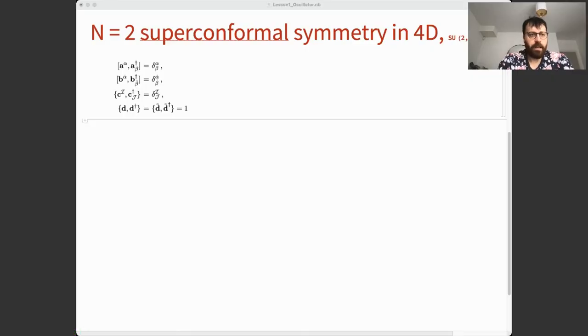Now we are ready to implement N equals 2 superconformal symmetry in four dimensions. For that, we will have to define a super oscillator algebra. In addition to the usual ladder operators A which we already implemented, we also need B, which is more or less the same, and also C. C contains anti-commutator, which is like a commutator just with plus in between.